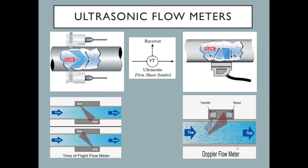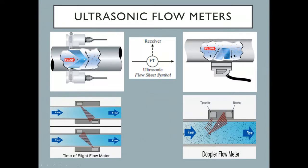The second style, shown on the right, is called a Doppler flow meter. It still uses a transmitter and receiver, but the major difference is that Doppler flow meters rely on particles, suspended solids, or bubbles within the flow stream to reflect the ultrasonic sound wave back to the receiver. Time-of-flight is generally used for clean flow applications, whereas Doppler flow meters actually require suspended solids, particles, or bubbles in the flow stream.